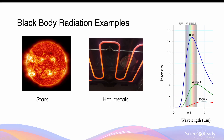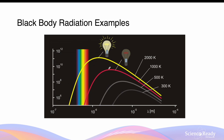As temperature increases further, radiation adopts a blue color because the intensity of blue wavelengths increases. For stars and hot metals that appear red or orange, we can expect temperatures around 3000 to 4000 kelvins, between the red and green predominant wavelengths of visible light. We'll discuss the relationship between temperature and wavelength in more detail later.